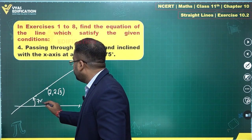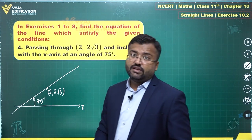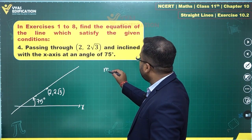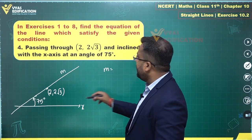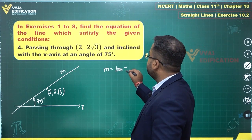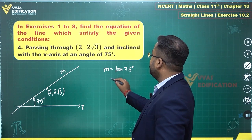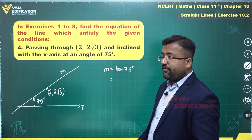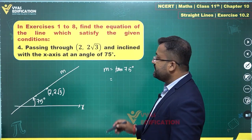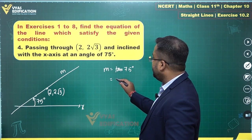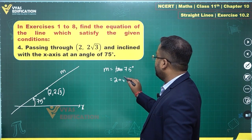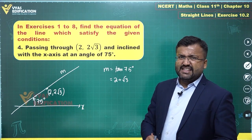And inclined with x-axis at an angle of 75 degree, this angle is 75 degree. It is given that it's inclined, that's what you have. So m, the slope, will be equal to tan 75 degree.